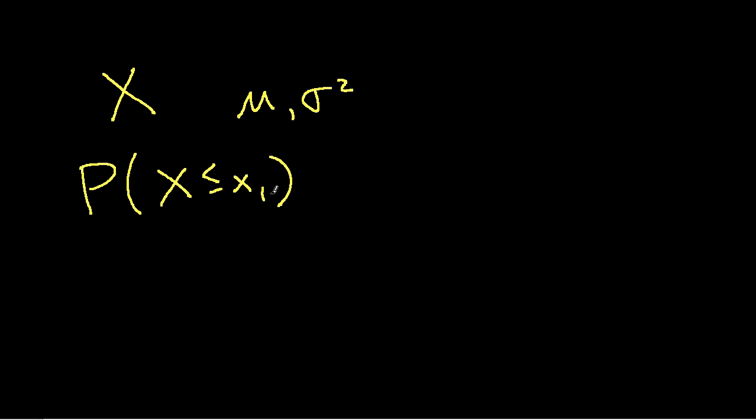So people had to make tables of the cumulative distribution function and it was infeasible to make tables for every value of a mean and every value of a variance that a normal random variable could have. So what we ended up doing is we standardized these normal random variables as follows.